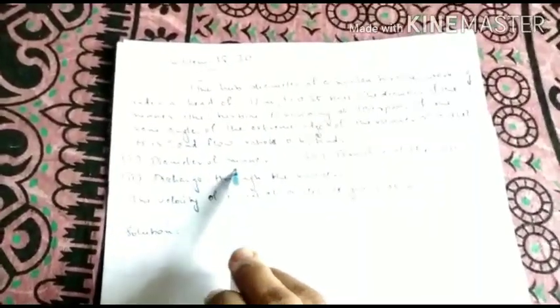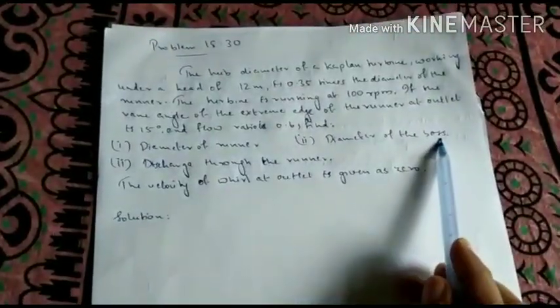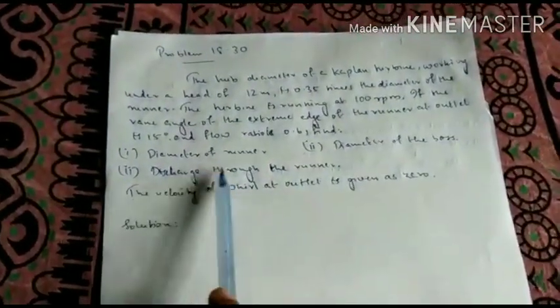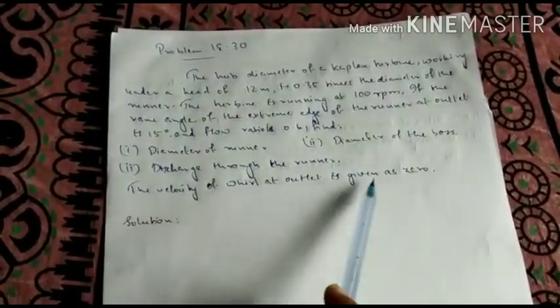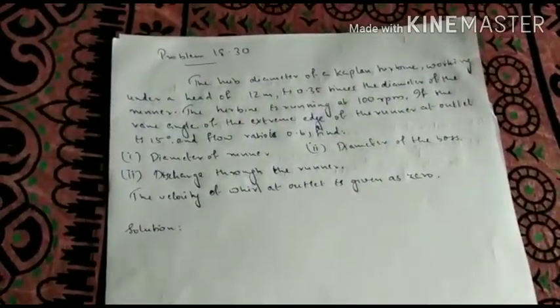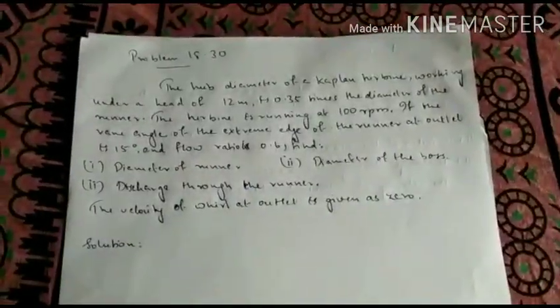Find diameter of the runner, diameter of the boss. Boss means hub. Discharge through the runner. And the velocity of whirl at outlet is given as 0. Hope the problem is clear to you. Now let me move on to the solution.